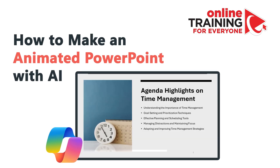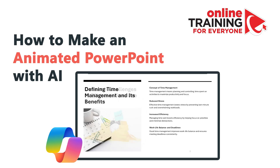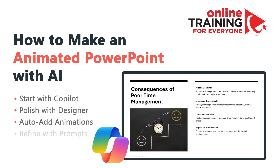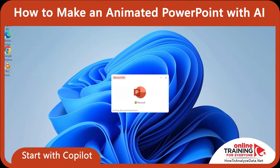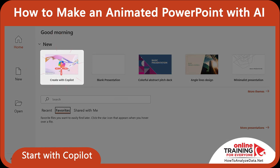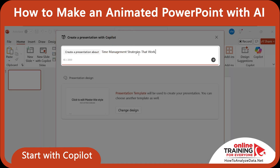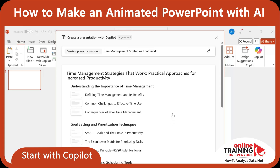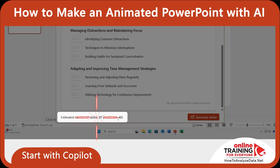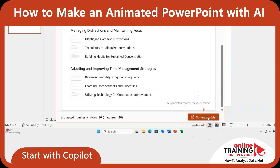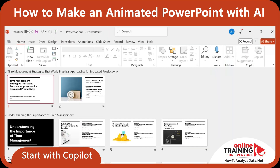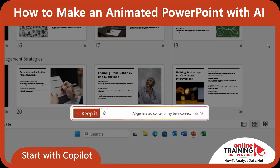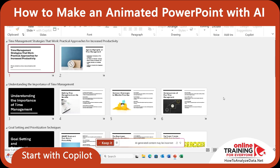As a professional, you very frequently face the challenge of building a presentation that looks polished without spending hours on design and animations. Let me show you how to build a cool presentation with Microsoft Copilot AI on the topic 'Time Management Strategies That Work.' Open PowerPoint and activate Copilot. In the home screen, click 'Create with Copilot,' type your topic, and in seconds Copilot generated an outline — covering all key topics and estimating between 20 and 40 slides. Click 'Generate Slides.' The slides Copilot generated are pretty good. There's a warning that AI-generated content may be incorrect, but after validating I click 'Keep it.'